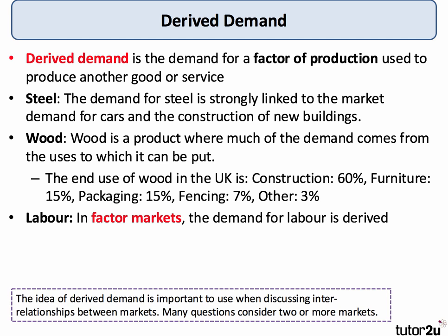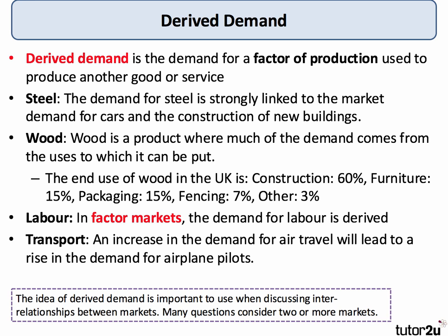Labour has a strong derived demand in the labour market, and we'll cover that in a separate topic video. The demand for transport also has a strong derived demand aspect. For example, if more people are flying on low-cost airlines, that will lead to an increase in the demand for airline pilots and other staff.